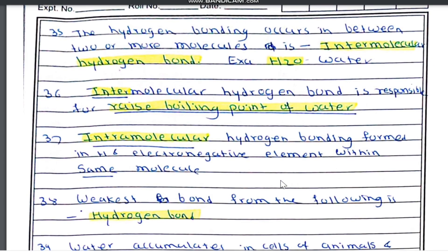Question number 35: hydrogen bonding occurring between two or more molecules is intermolecular hydrogen bond — for example, in water. Intermolecular hydrogen bond is responsible for the rise in boiling point of water. Intramolecular hydrogen bond is formed between hydrogen and an electronegative element within the same molecule.